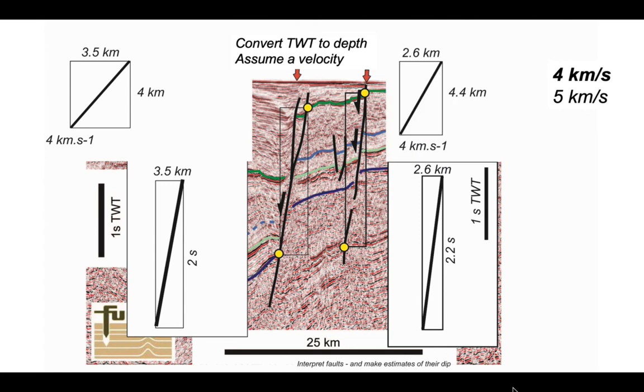In contrast, we can set up the same velocity structure for the fault on the right. 2.2 seconds two-way time converts to 4.4 kilometres using a seismic velocity of 4 kilometres a second.